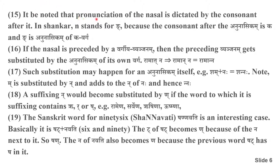It would be noted that pronunciation of the nasal is dictated by the consonant after it. In Shankara, N stands for Na because the consonant after the Anunasikam is Ka, and Na is Anunasikam of Ka-varga. If the nasal is preceded by a Vargi-Venjanam, then the preceding Venjanam gets substituted by an Anunasikam of its own Varga. Rama-Nam: To is a Vargi-Venjanam among the five Vargas. To-Varga is the fourth Varga. This To, because of the Na after it, will get substituted by Na. Hence the total writing will be Rama-Nam.